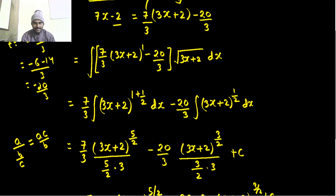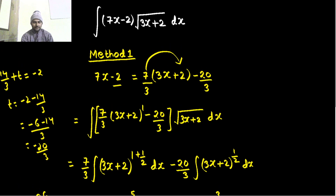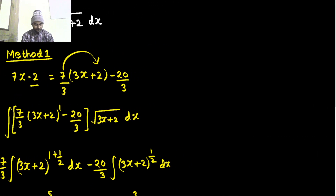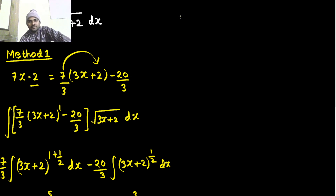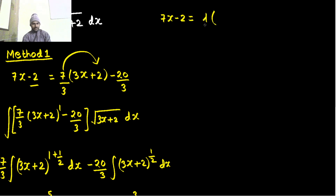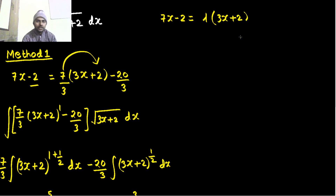As easy as you can see. Now, method 2 I was talking about — instead of doing the first step manually, we do this with the help of a technique. We write the outer linear expression, which is 7x minus 2, as lambda times the inner one. The inner one is 3x plus 2 — only whatever is inside the root, I'm talking about the linear expression, not the root — plus mu.